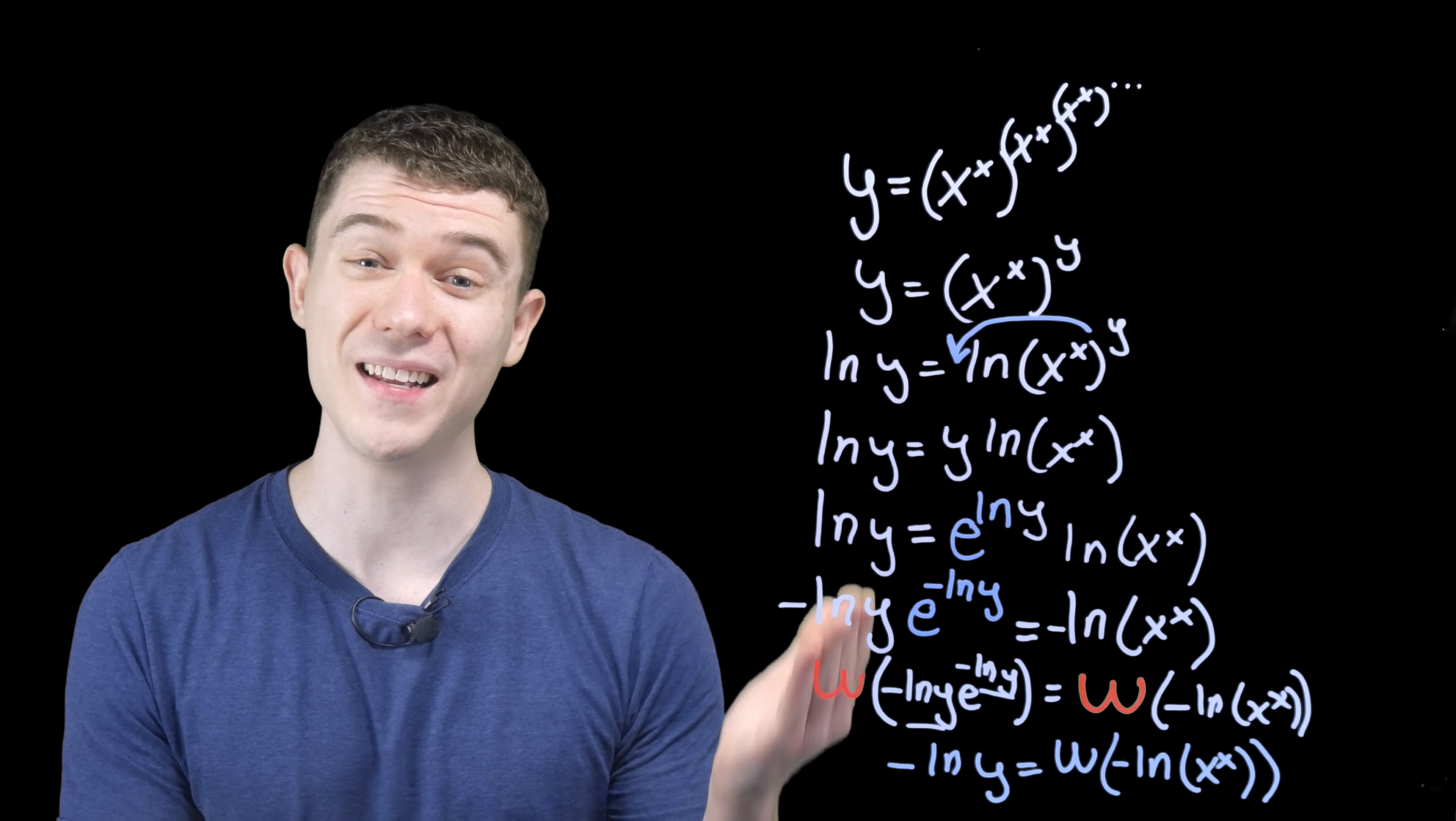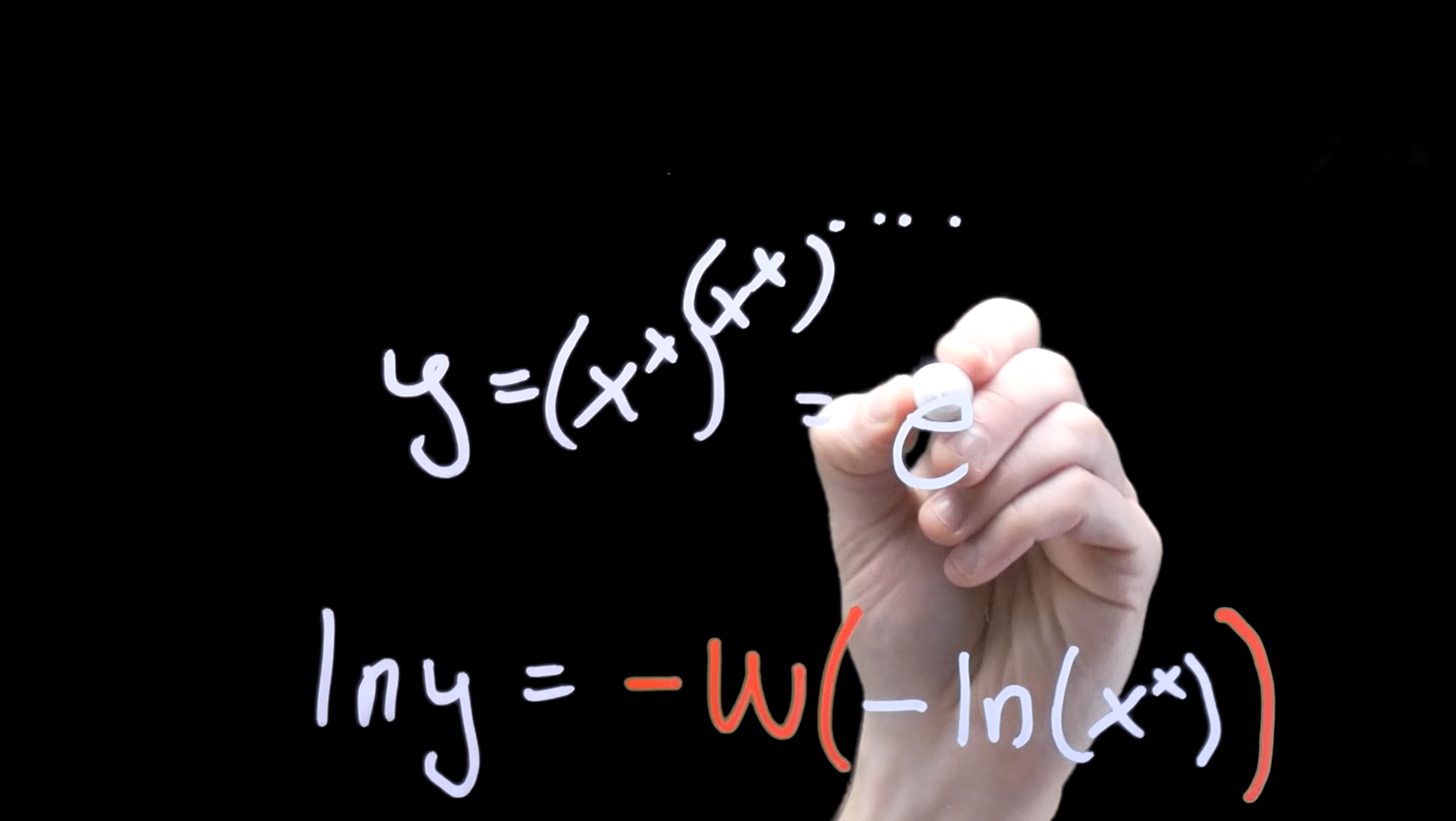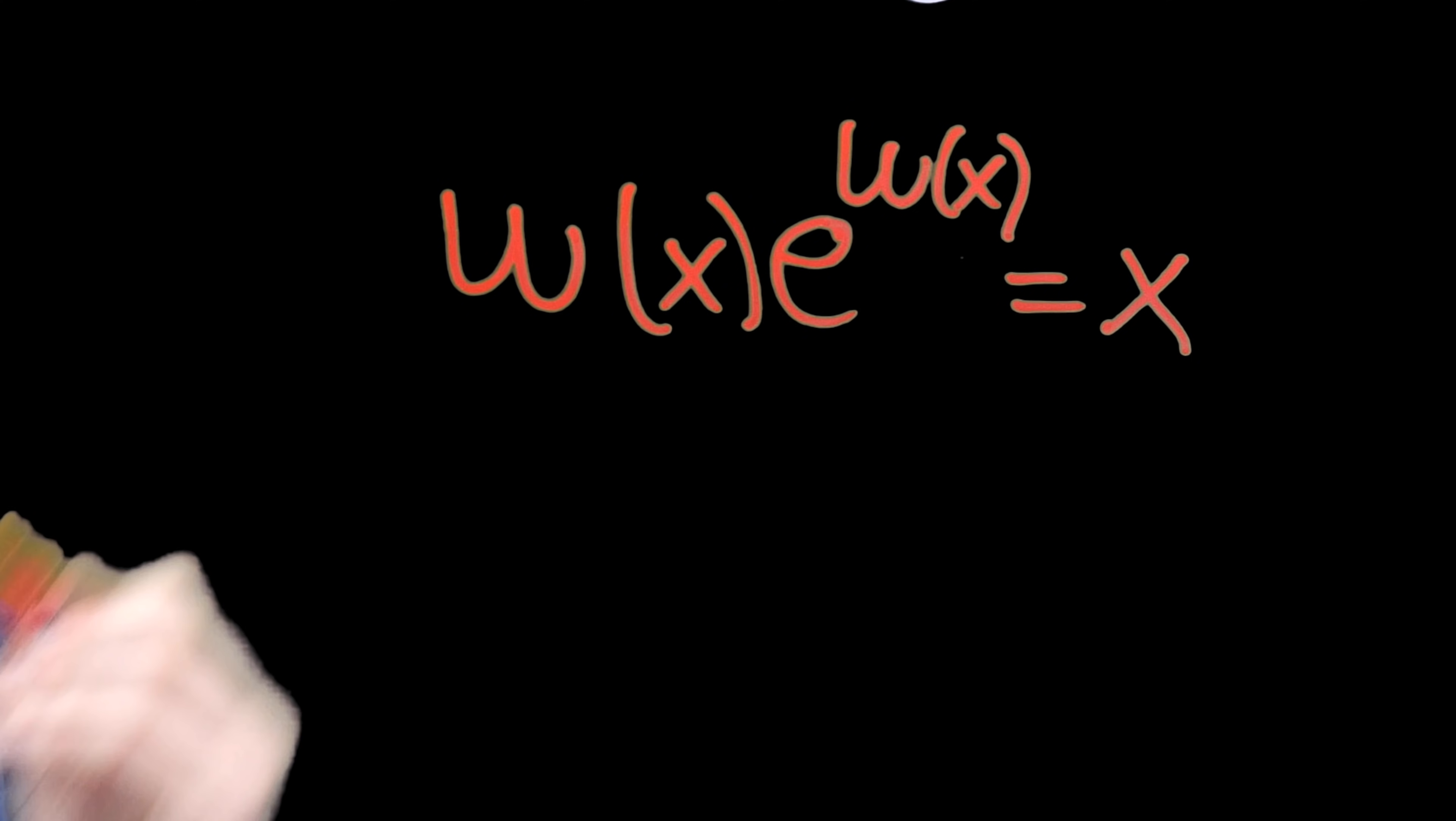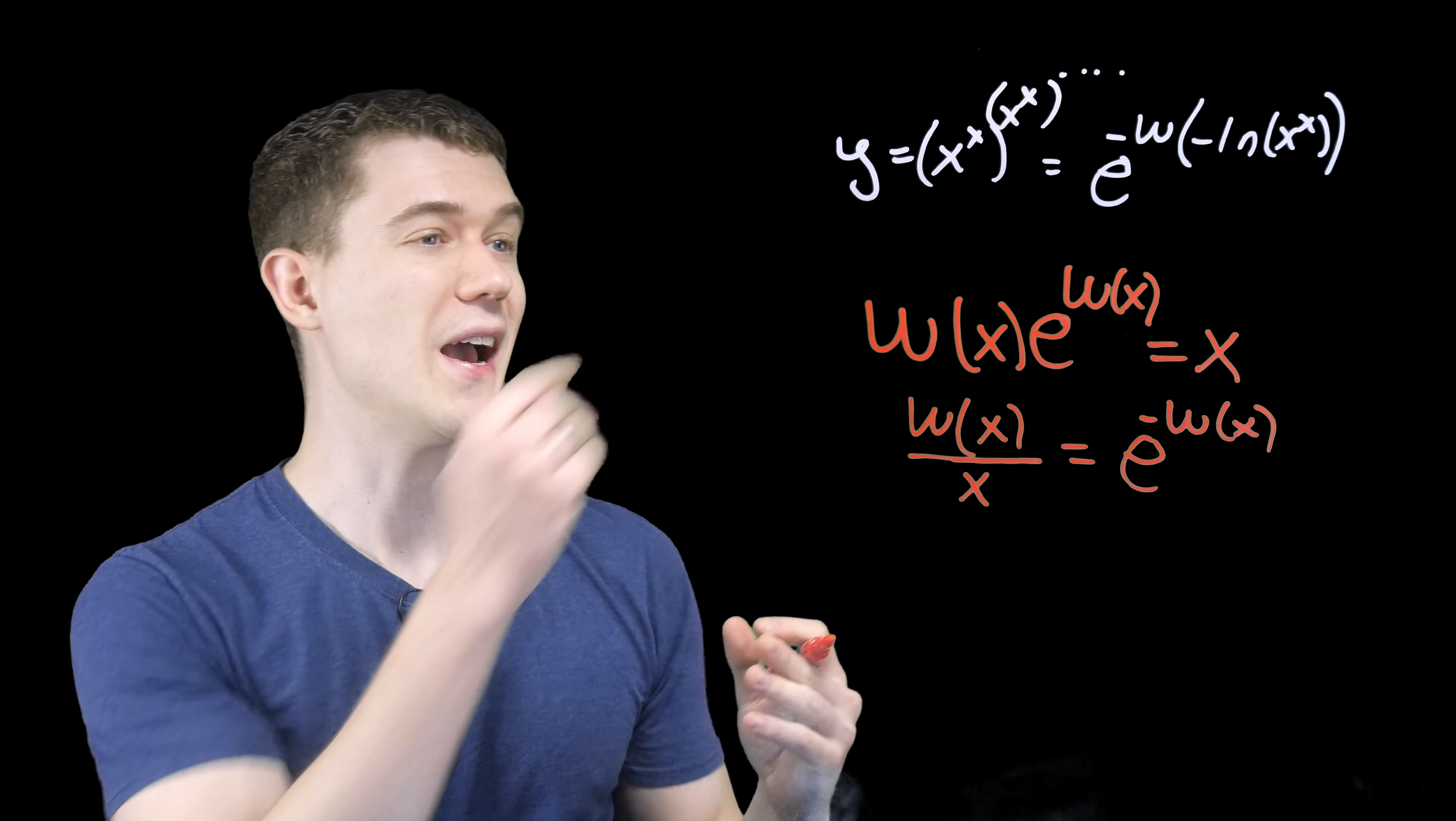So now we've composed those. We've canceled things out with the Lambert function. We're only a few steps away from solving for y. So ln of y is minus w of minus ln of x to the x. Or we can take the e of both sides and say that our original y is also equal to e to the minus w of minus natural log of x to the x. Now thanks to those inverse properties of the Lambert function, we can rearrange this so we have e to the minus w of something in the exponent. Let's do just that. Let's divide both sides by x and divide both sides by e to the w of x. W of x over x equals e to the minus w of x. And now we have yet another representation for what we have as y.